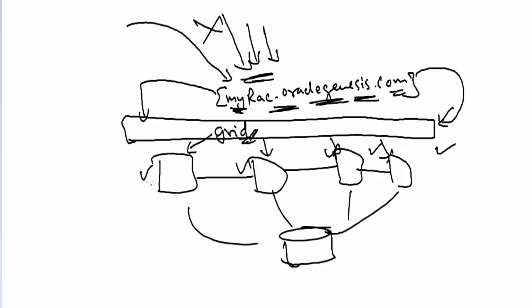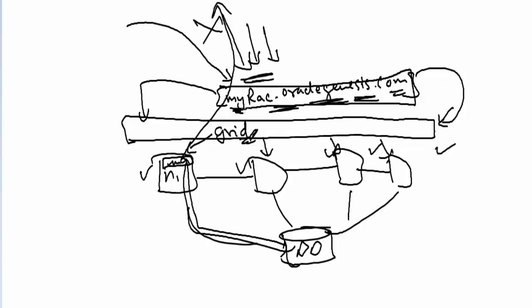The same logic applies on the response side. If work is given to node 1, the database instance on that physical node talks to the shared storage, gets the required blocks into the instance, and returns them to the user. This is the generic working of clustering software. For the outside world, all applications have only one connection name. The application doesn't know whether it's a single host, a RAC software, a cluster, or one server — it just sends queries to that name.